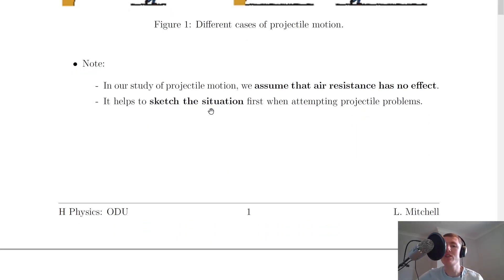The last thing to note is that in our study of projectile motion we will always assume that air resistance has no effect because if we did take air resistance into account it would make analyzing our problems a lot more difficult. It also helps to sketch the situation first when attempting projectile problems. So often what you'll see in the worked examples is we'll sketch a situation first so that we can then go on and analyze it. And that's just to help us visualize what's actually happening in the question.